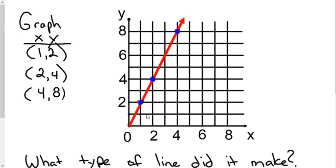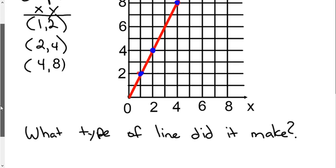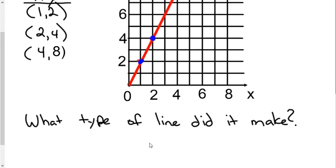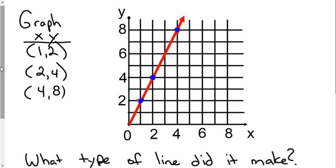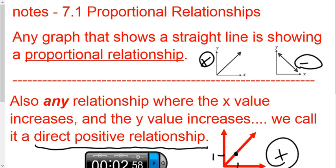You'll notice what type of line it made was a straight line. So using this idea where we took three ratios that could all be made into proportions, when we graphed them on a Cartesian plane, it made a straight line. So from that, let's go ahead and start looking at our notes here.